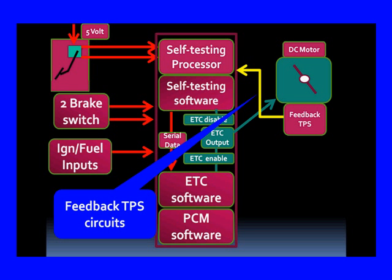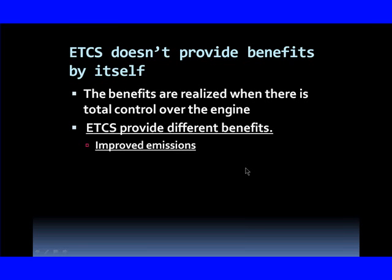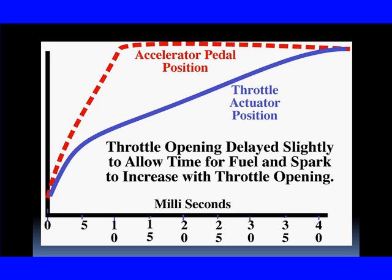Electronic throttle control doesn't provide benefits by itself — the benefits are realized when there's total control of the engine. It can improve emissions. Here's how: the red line on the graph is the accelerator pedal, rising quickly as the customer steps hard on the gas — going from idle to wide-open throttle in one-tenth of a second. But the blue line shows the gradual opening of the throttle as done by electronic throttle control. The throttle opening is delayed slightly to allow time for fuel and spark to increase with throttle opening — a very smooth transition.